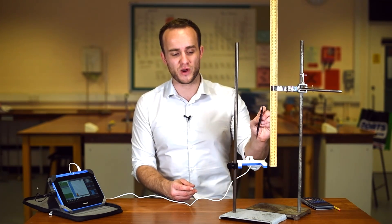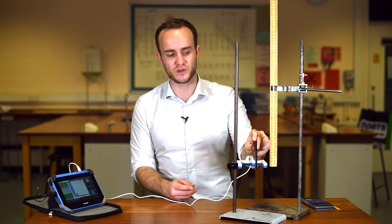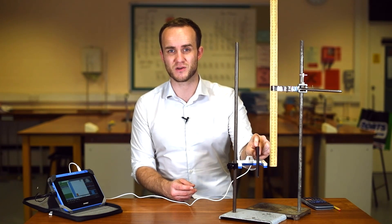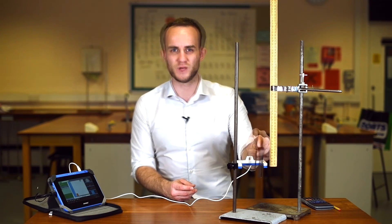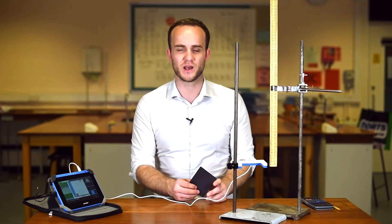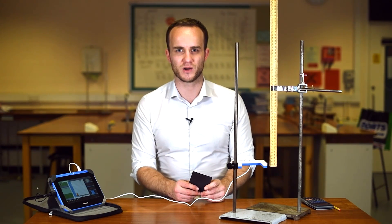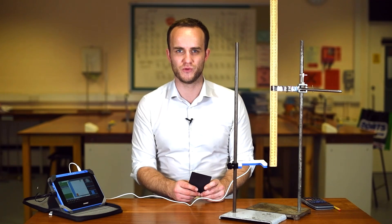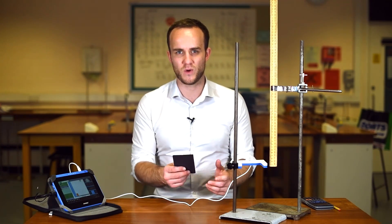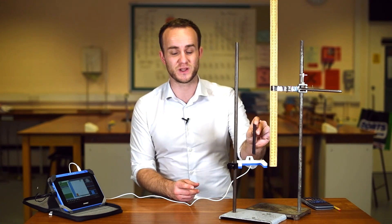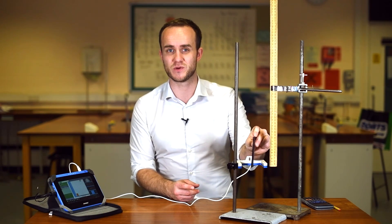So the question is, at what point with the card going through the light gate is that velocity correct? We can't be sure, so what we'll say is that we're going to line up the halfway mark on the card with our ruler, and so that way we can say well we know that the velocity is going to be correct somewhere in between it entering and exiting, and then we can say the uncertainty in the distance is going to be half the length of the card. You can take that into account if you want, it's up to you.